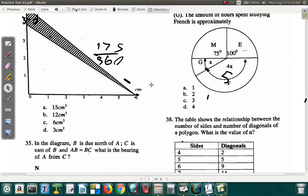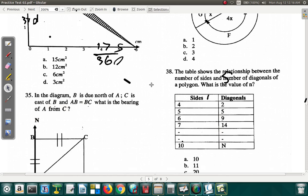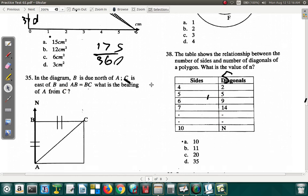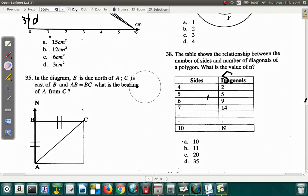Question 38, let's look at it. The table shows the relationship between the number of sides and the number of diagonals of a polygon. What is the value of N? Interesting. Let's erase these and then go on to it.